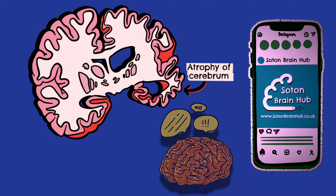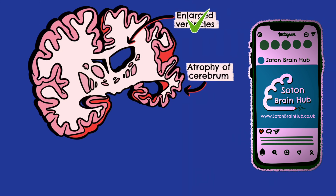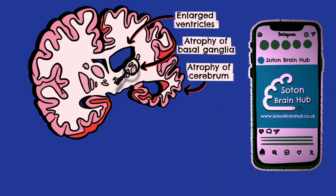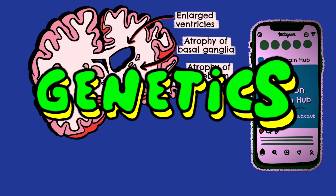Enlargement of ventricles, caused by the global loss of neurons in the brain from the abnormal formation of Huntington protein. Atrophy of the basal ganglia, which plays a key role in movement and behavior control, causes a hyperkinetic disorder called chorea and disinhibition, which is loss of restraint and increased impulsivity.